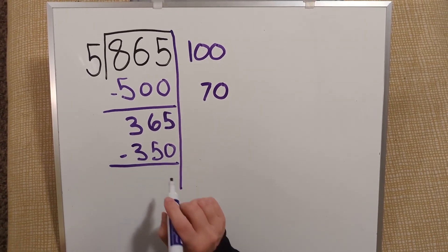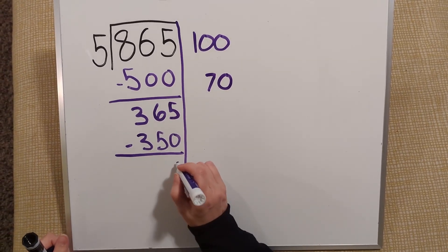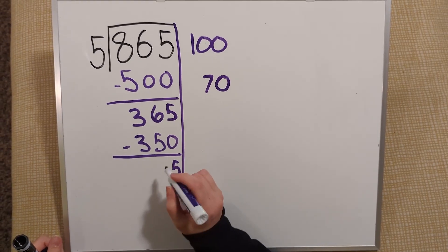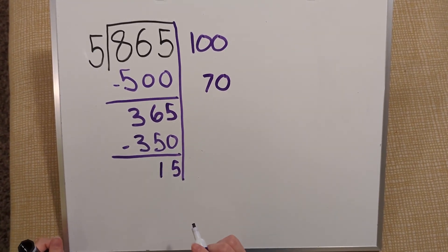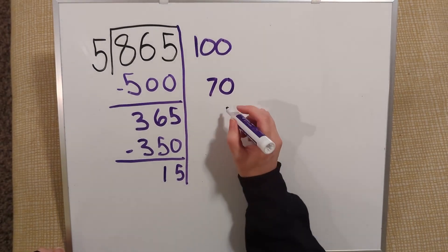I subtract 350 off of 365. 5 minus 0 is 5. 6 minus 5 is 1. Well this one's easy. I know that 5 can go into 15 3 times.